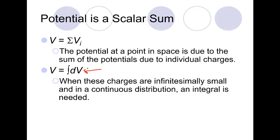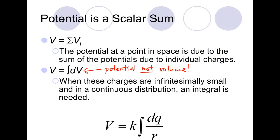Be very clear that dV here is a small amount of electric potential, not volume. Our key equation is that V equals k times the integral of dq over r. So if we can find some way to write dq in terms of a spatial variable, just like with an electric field, we should be able to integrate and calculate the electric potential. We also have a way to check our work because the electric field is negative dV/dr.